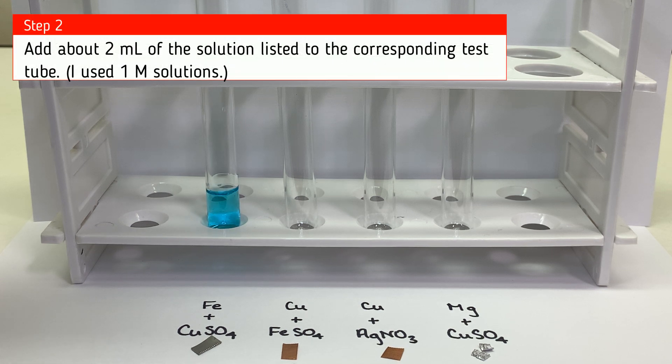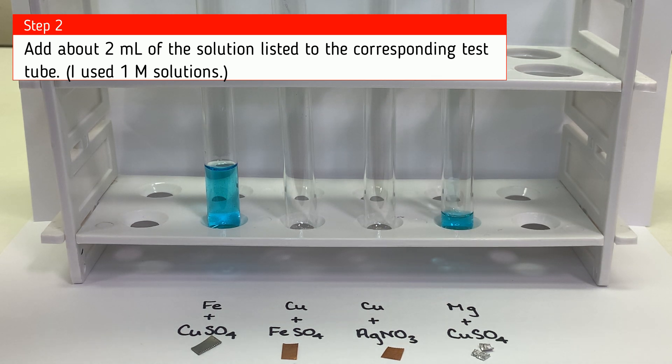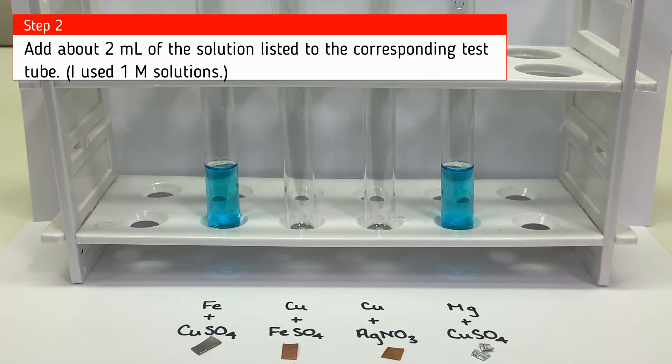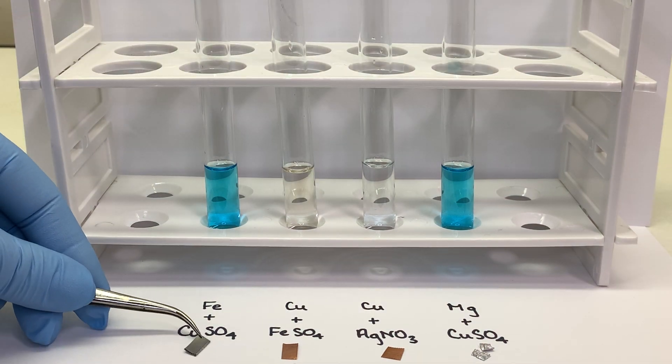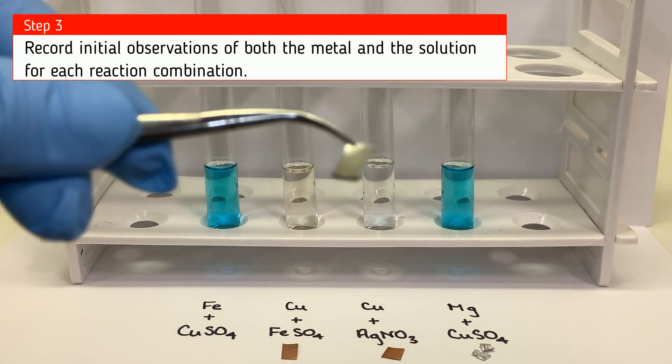We will be combining a small amount of each of the metals with about 2 milliliters of the solution listed. So as I'm preparing my ingredients here, you should be creating a data table where you can record your observations of the metal and the solution separately before the reaction takes place. Then create a data table where you record your observations of each mixture both 15 minutes and 30 minutes after the reaction takes place.